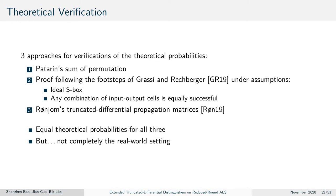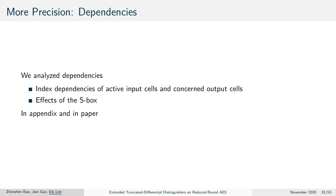Nevertheless, they did not completely model the real-world setting. We tried to refine our analysis and considered two kinds of parameters. First, index dependencies — meaning at which position we used an active input cell in the plaintext and which output cells were considered. Second, we considered effects of using different S-boxes in small-scale variants. Those results are presented at the end and can be found in our paper.